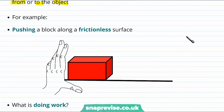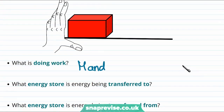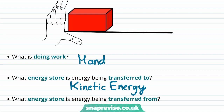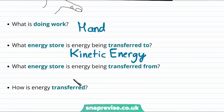Let's imagine pushing a block along a frictionless surface. The first question we might ask is: what is doing work — what has transferred the energy to the block? Well, the thing that got the block to move was our hand, so we say that it's the hand that was doing work. Next, what energy store has energy been transferred to? The end result is that the block is now moving, so the energy must have been transferred to the kinetic energy store of the block. What energy store was the energy transferred from? We said that the energy stored in our muscles is chemical energy, so the energy store that energy has been transferred from is the chemical energy store.